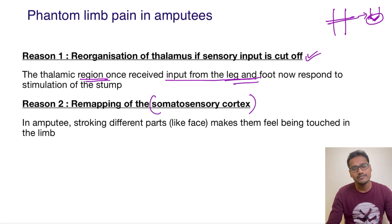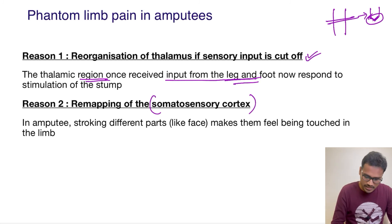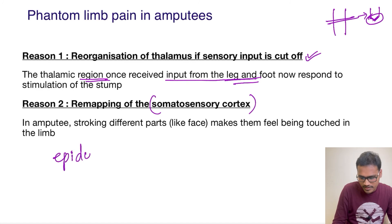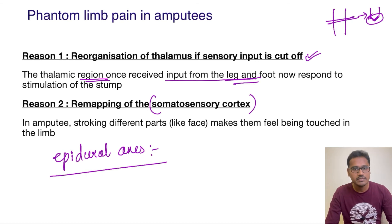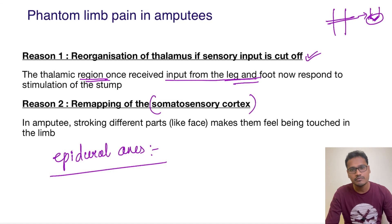Nowadays, to prevent this, it has been observed that whenever epidural anesthesia is used during surgeries, the incidence of pain immediately after surgery is reduced, and the incidence of phantom limb pain is also reduced. They are not sure what the exact mechanism behind this is, but epidural anesthesia appears to help. I hope that's clear — thank you for listening, we'll see you in the next video.